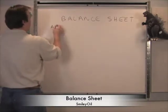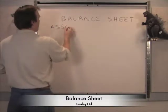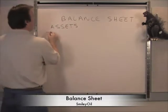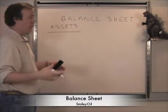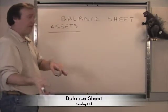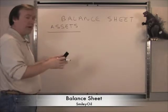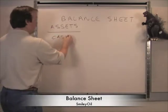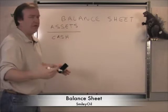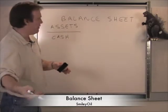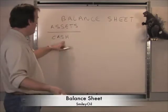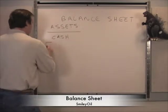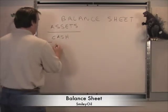The left side is assets, and it's done in ascending order based on liquidity. Liquidity is a fancy word for how fast you can convert something into cash. So if you have pure cash, that would be the most liquid, whereas if you had land, it would take some time to sell it. So you have cash first, and then you have accounts receivable.